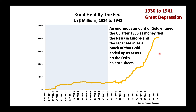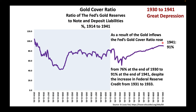An enormous amount of gold entered the U.S. after 1933 as money fled the Nazis in Europe and the Japanese in Asia. Much of that money ended up as assets on the Fed's balance sheet. The Fed's gold holdings surged. As a result of the gold inflows, the Fed's gold cover ratio rose from 76% at the end of 1930 to 91% at the end of 1941, despite the increase in Federal Reserve credit from 1931 to 1933.